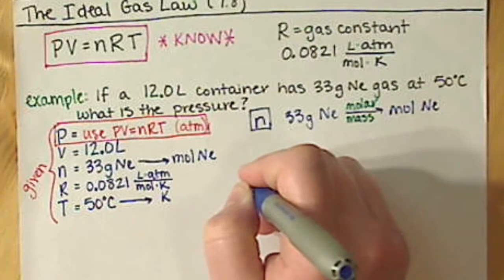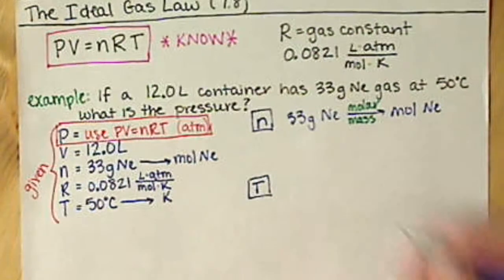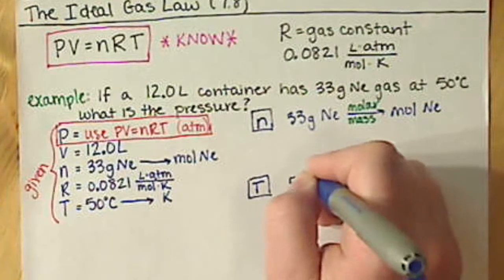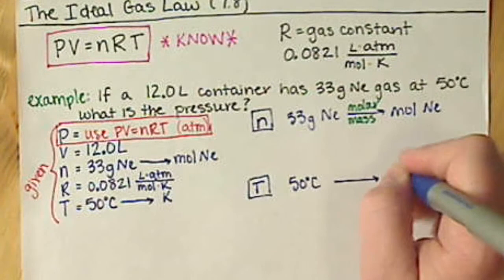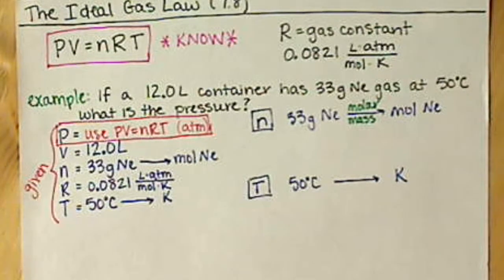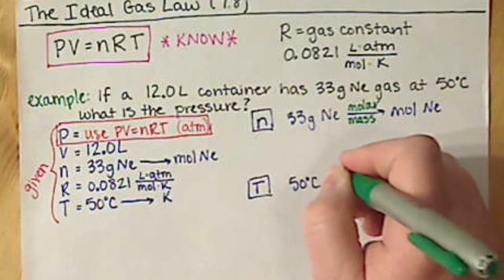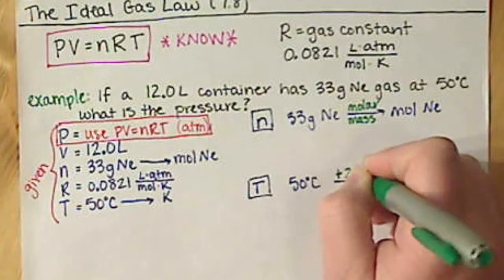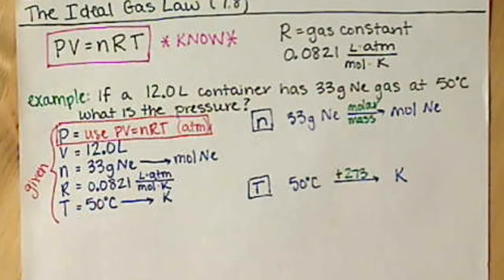We also need to convert our temperature. We need to go from 50 degrees Celsius to Kelvin. And how do we convert from degrees Celsius to Kelvin? We want to add 273. Technically, it's 273.15. 273 should be good enough for us. I haven't actually looked at the Sapling site. Hopefully that will also work for Sapling.